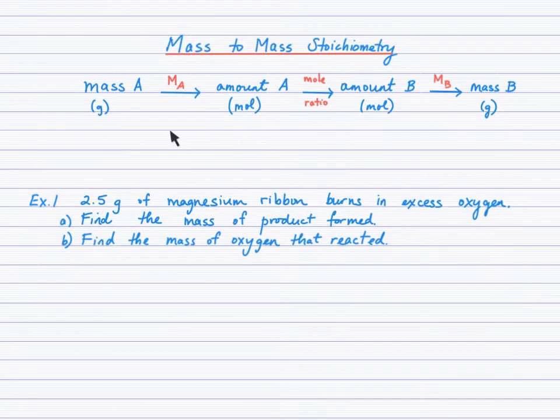In today's lesson, we are saying, well, realistically, since we can't measure or count the moles of a substance in the lab, perhaps we've measured the mass of a solid. For example, 2.5 grams of magnesium ribbon. So if 2.5 grams of magnesium ribbon is burning in oxygen, then our question could be what mass of product is formed? Or secondly, we could even determine the mass of oxygen that actually reacts with the 2.5 grams of the magnesium.